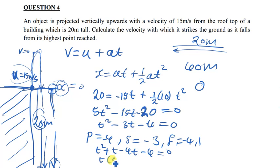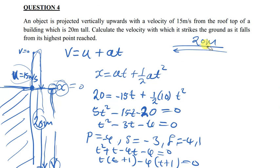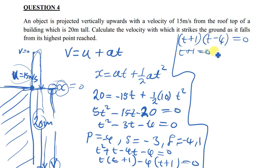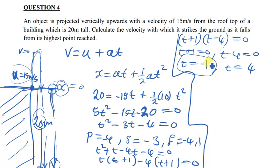After doing the factorization, we get (t + 1)(t - 4) = 0. Equating each factor to zero: t = -1 or t = 4. Since time is never negative, t = -1 is disqualified. So the time it took to move from the rooftop to the ground is simply 4 seconds.